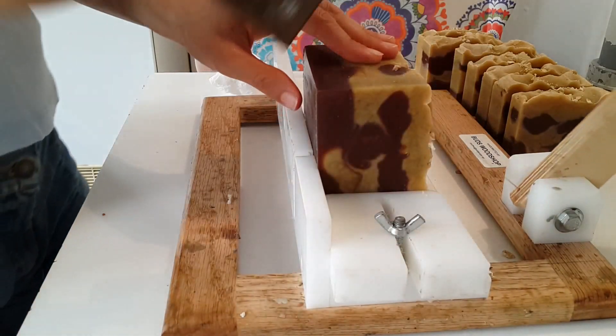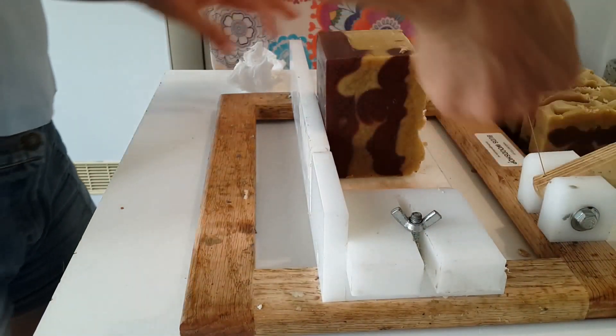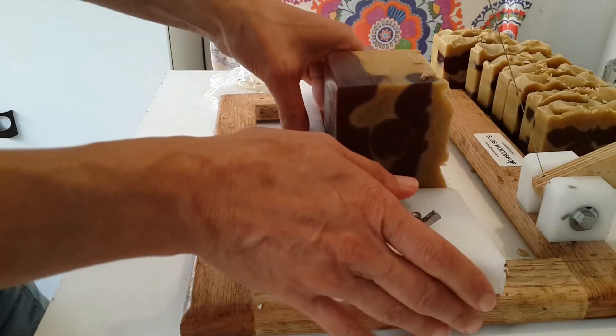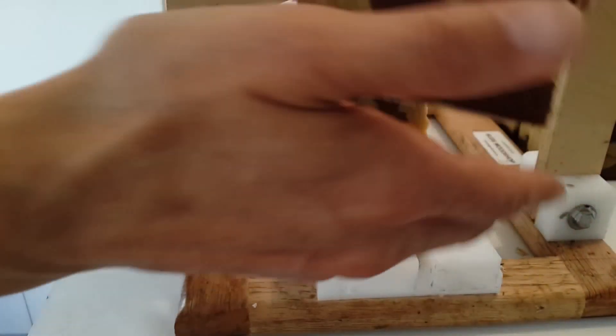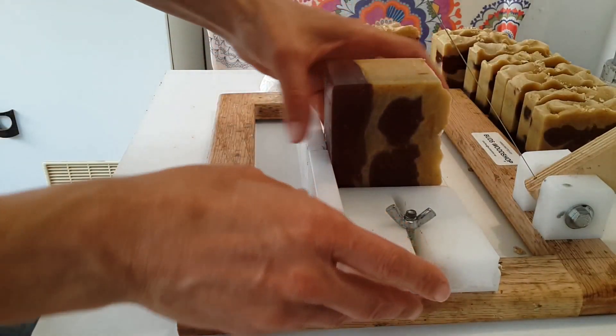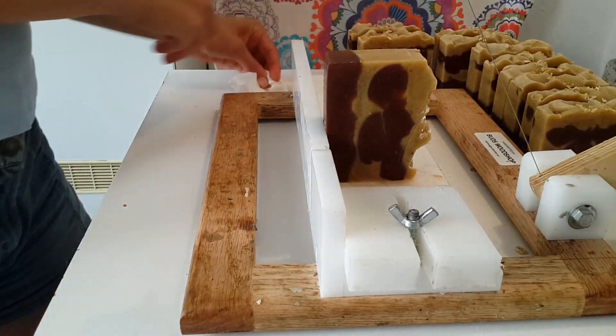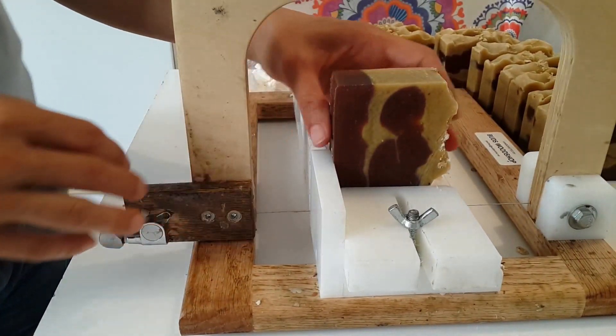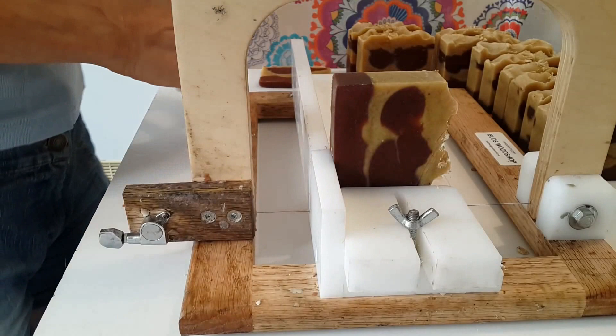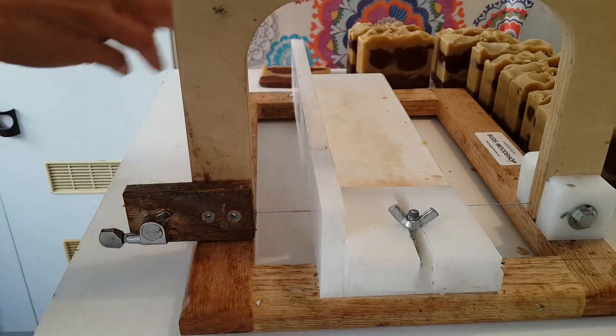This soap, anytime I make it, stresses me because I like to use a lot of molasses. As you know, sugars in soap heat the soap up, and I always stress before I make this soap. A shelf in the refrigerator is always ready in case of overheating. I sent this soap to the refrigerator for a few hours.